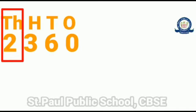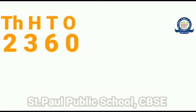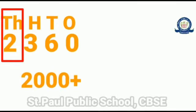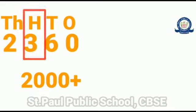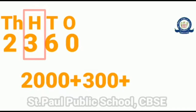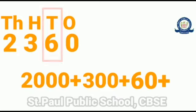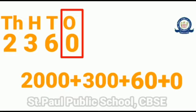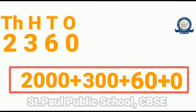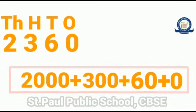First, start with the thousands place — we have 2 thousands, so write 2000. In the hundreds place we have 3, so there are 3 hundreds. In the tens place we have 6, so the value is 60. In the ones place we have zero. The expanded form is 2000 + 300 + 60 + 0.